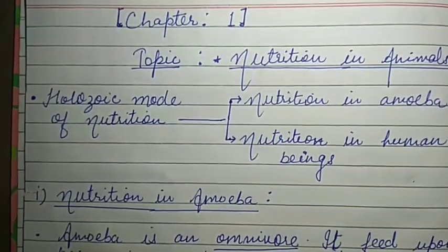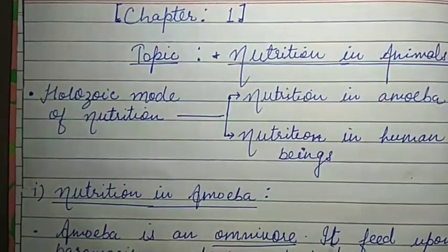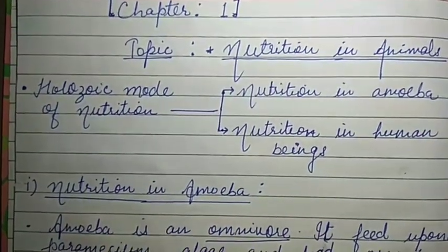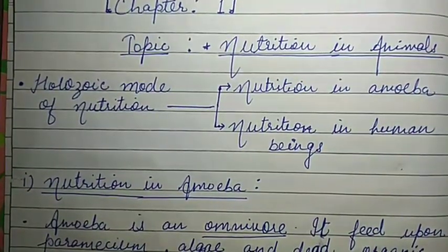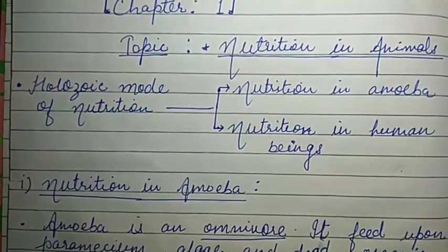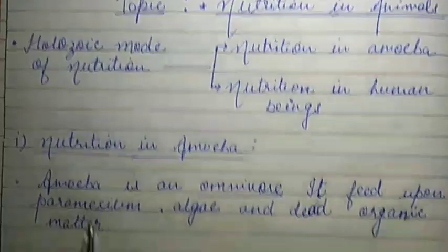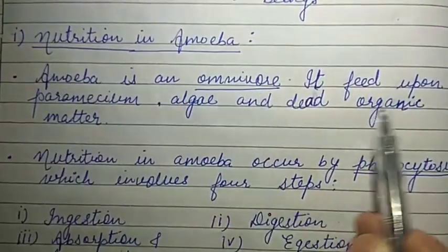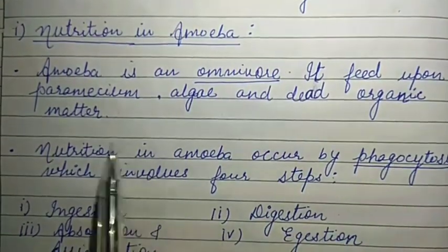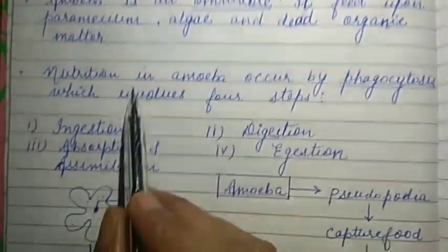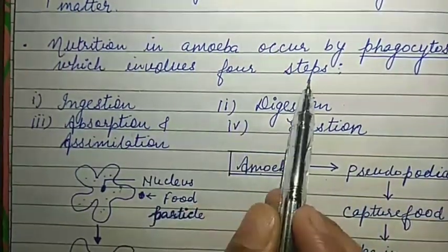First we will discuss nutrition in amoeba. We all know that amoeba is a unicellular organism, meaning its body is made up of a single cell. Though it is unicellular, it is eukaryotic. Amoeba is an omnivore — it feeds upon paramecium, algae, and dead organic matter. Nutrition in amoeba occurs by phagocytosis, which involves four steps.